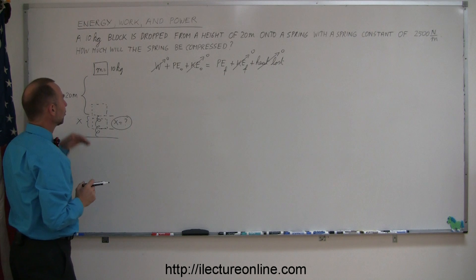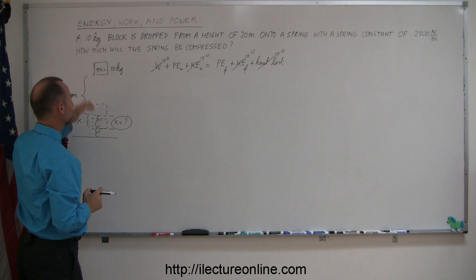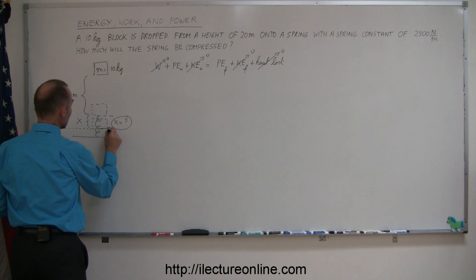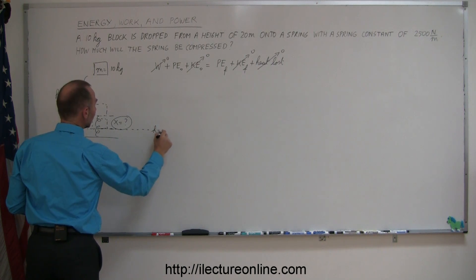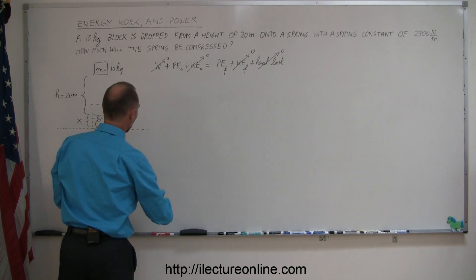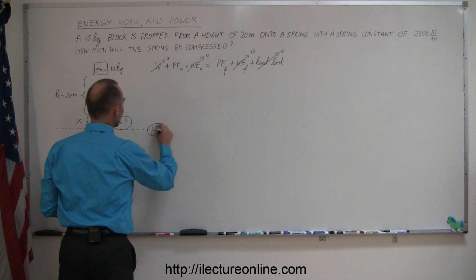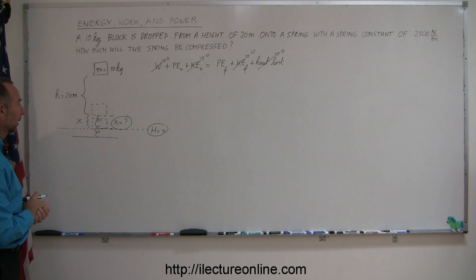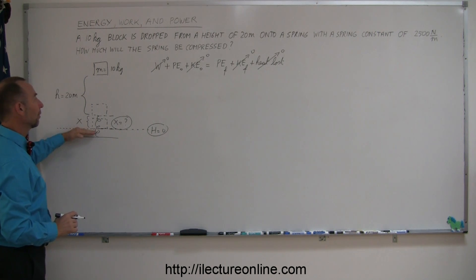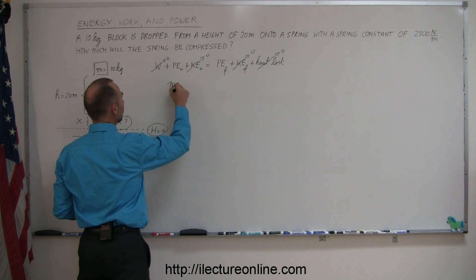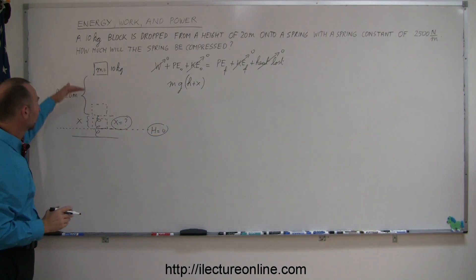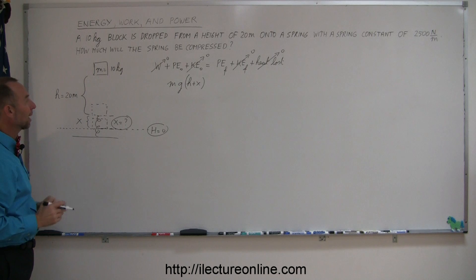Now, since the initial potential energy is due to the height that the object has, we have to have some reference height. And I'm going to call the very final position of the block H equals zero. Or I shouldn't call it H because we don't want to confuse it with that, but let's call it just big H. Big H equals zero. That's my reference position for my problem. So, the block starts from a height of 20 meters, H, plus the distance X above that reference point. So, we say then that the initial potential energy is MGH plus X, the two combined. So, that's the total height from which the block is dropped relative to where it's finally going to end up at the very end of the problem.